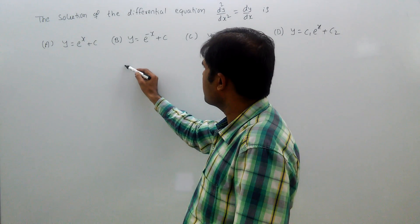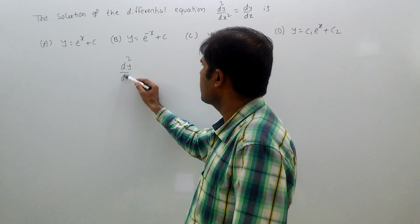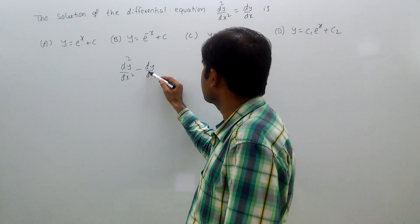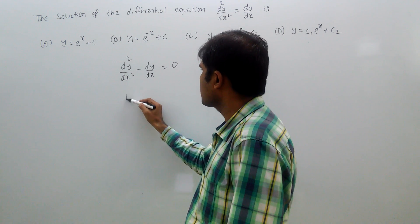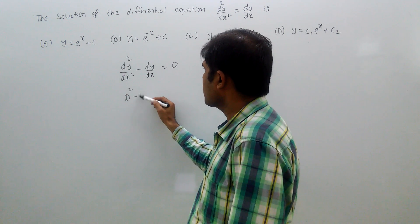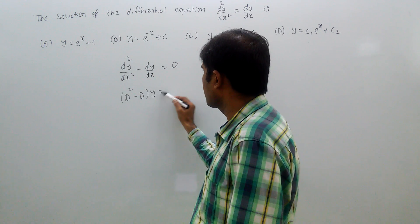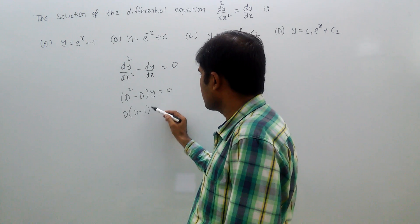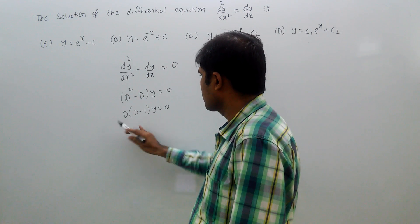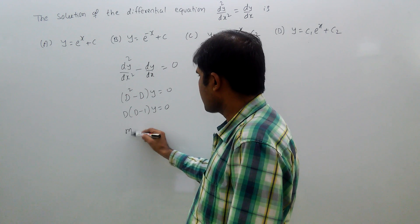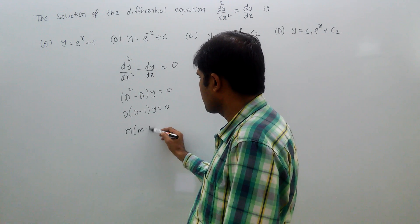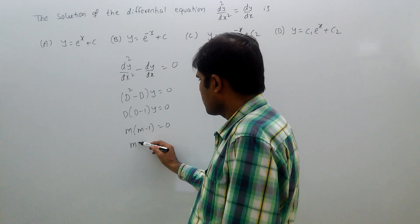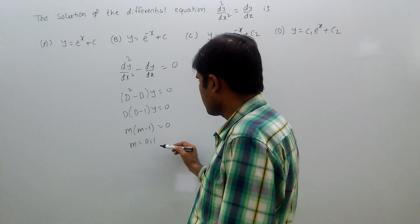This equation is here: d squared y by dx squared minus dy by dx equal to 0. That means d squared minus d of y equal to 0. That means d into d minus 1 of y equal to 0. Therefore, the auxiliary equation is m into m minus 1 equal to 0.